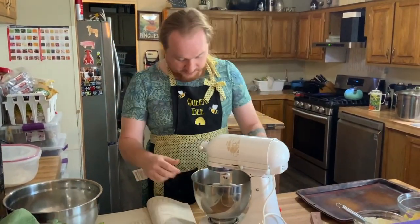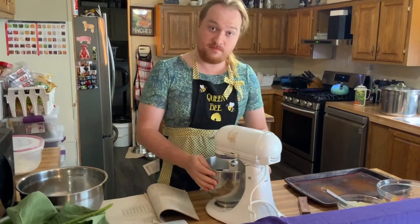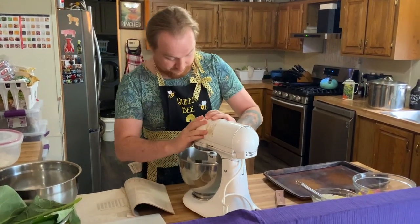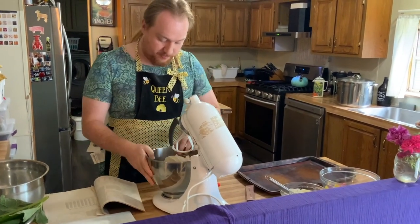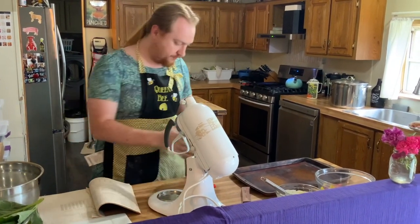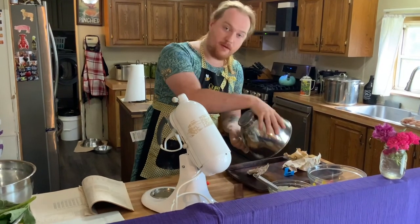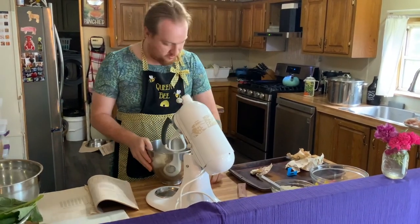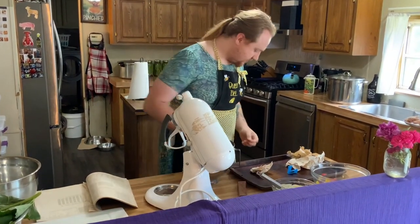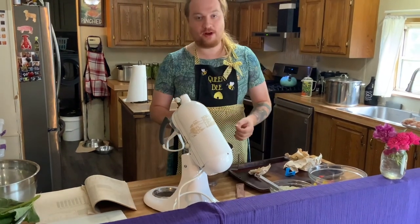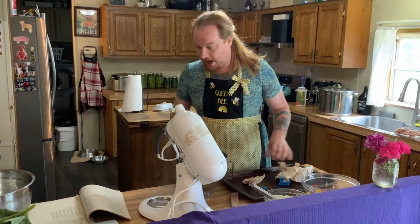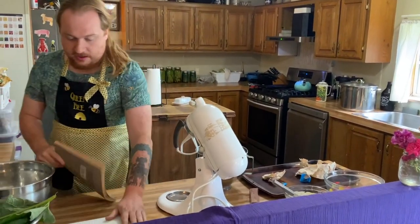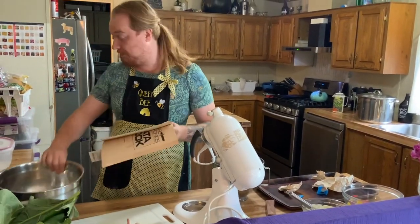All right now we're going to pour this into our kitchen aid stand mixer and just let it run on low for a couple of seconds. Let's just add just a few numbers and digits. I like the number four, the number one, and the number seven. That should do it.